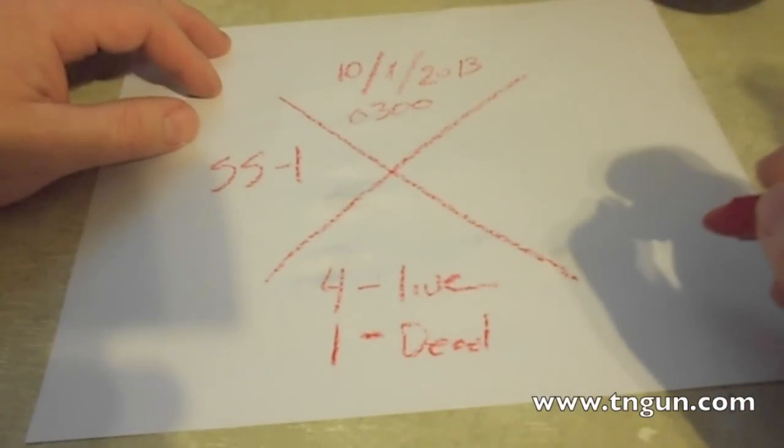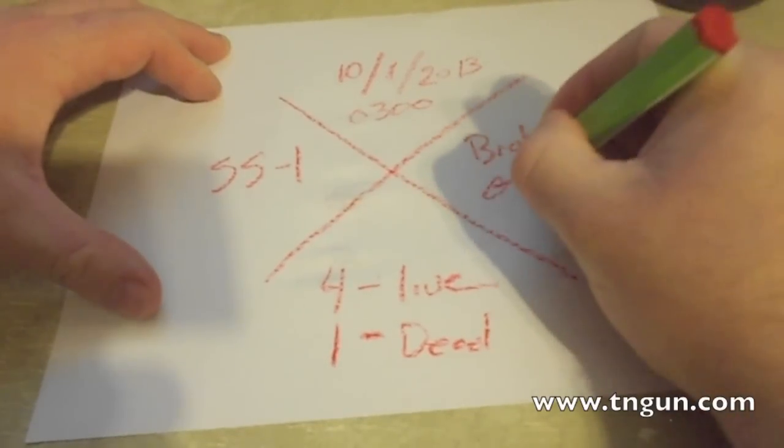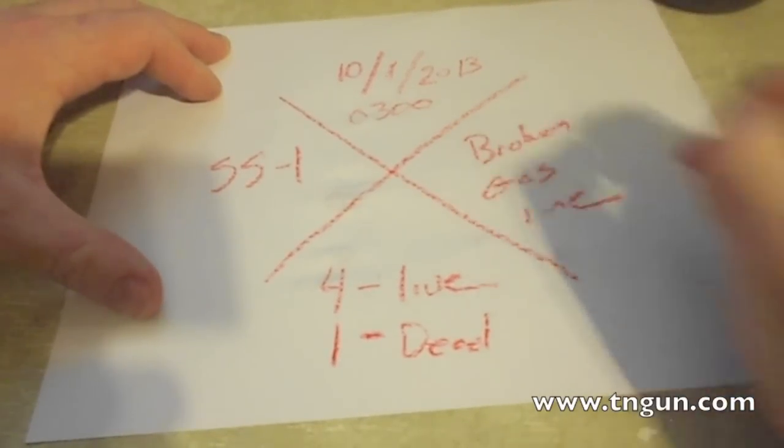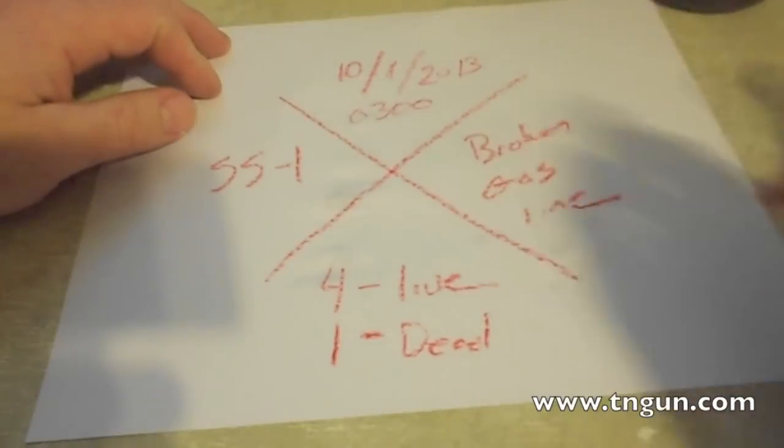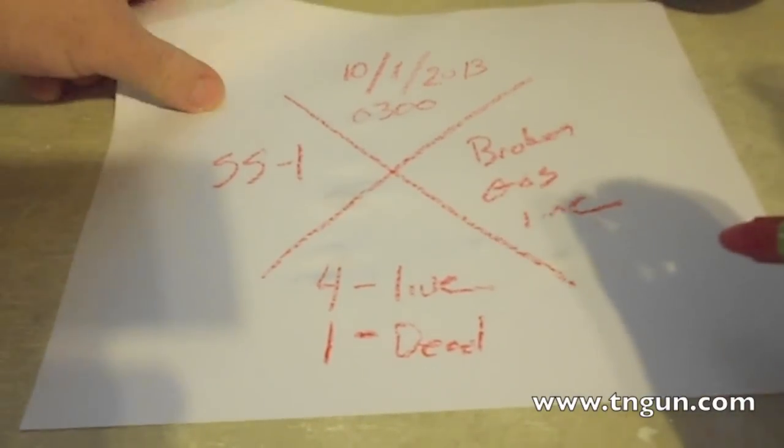On the right, we put anything that we found that might be a danger—broken gas line. That lets them know there's a broken gas line here. It could say rats, disease, structure damage, whatever. And that's a down-and-dirty X marking for urban search and rescue.